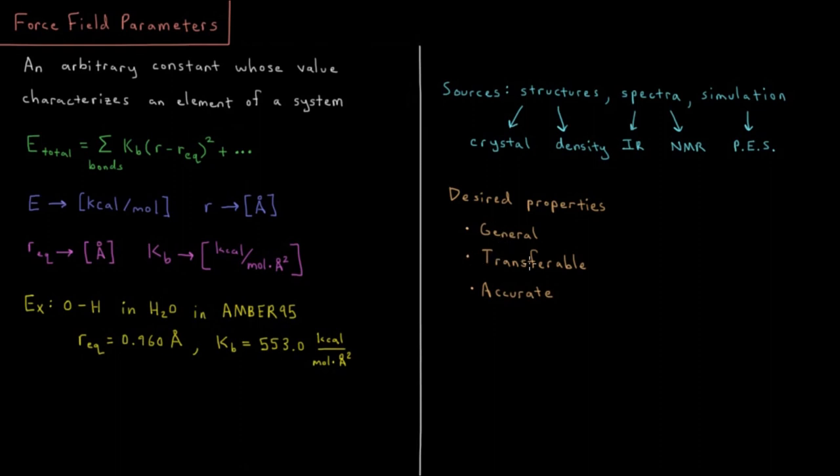I might want them to be transferable. For example, if I derive parameters for butane, I probably want those parameters to work for pentane or hexane as well. Hopefully those are pretty similar and I can transfer those parameters from similar systems and interchange them.